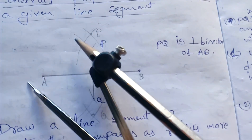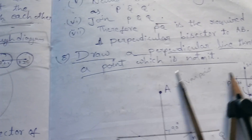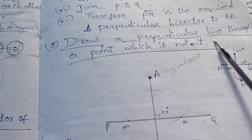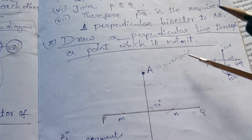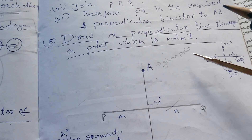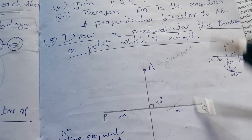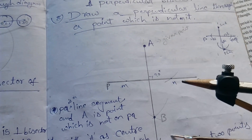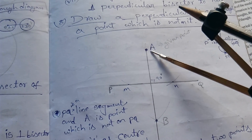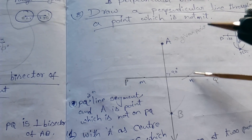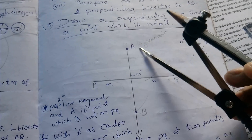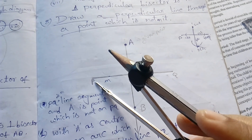Next type of construction: draw a perpendicular line through a point which is not on the line. In the exam, the question may ask for the steps to construct a perpendicular line through a point not on the given line. This type of question may come for five marks. Here, a point is given, and PQ is one line segment.